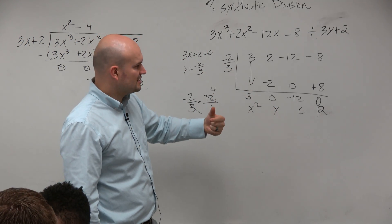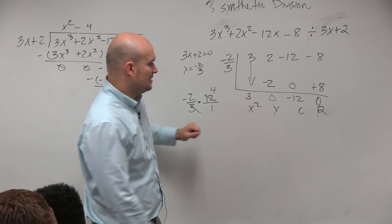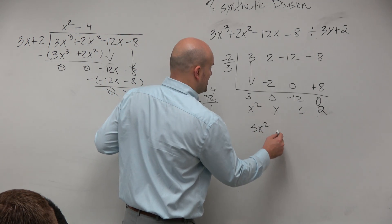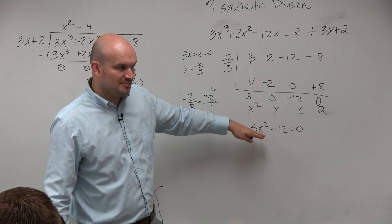Or to find the zeros, synthetic division is fine. Because this doesn't change the zeros. You could still find the zeros from here. It's not going to matter. Like if we write this as 3x squared minus 12 equals 0, finding the zeros is fairly simple too, right?